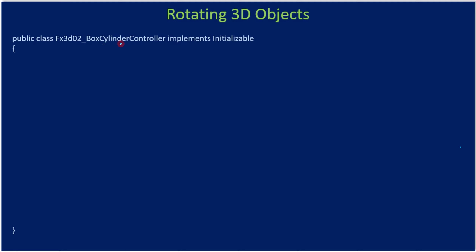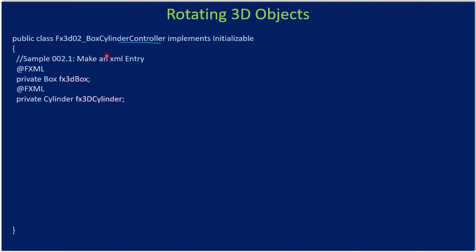In our controller, we already added the FXML entry for accessing the 3D box as well as the 3D cylinder. We provided an FXML ID (fx:id) and we are accessing that here as a private member of our controller.